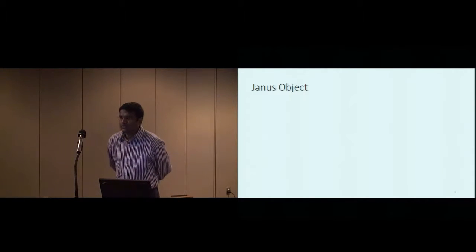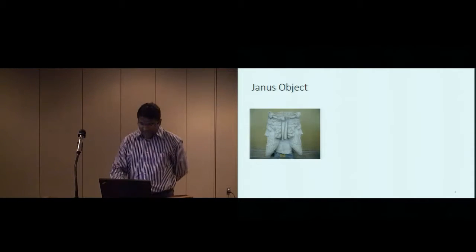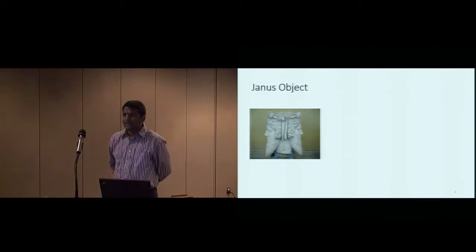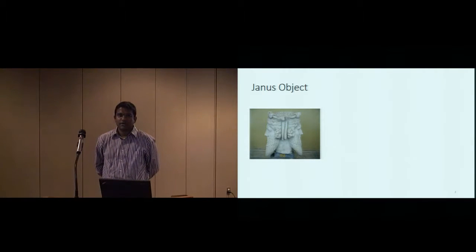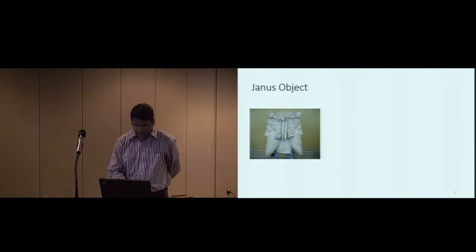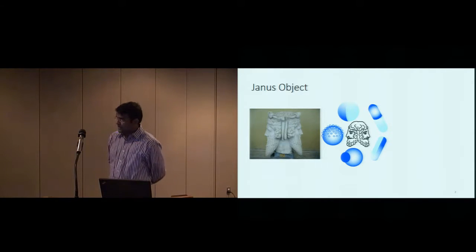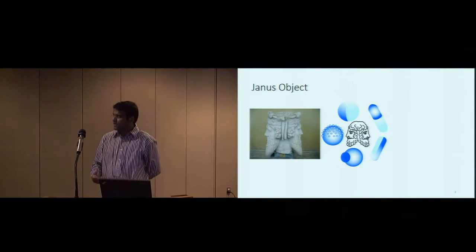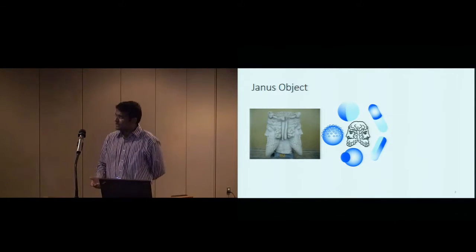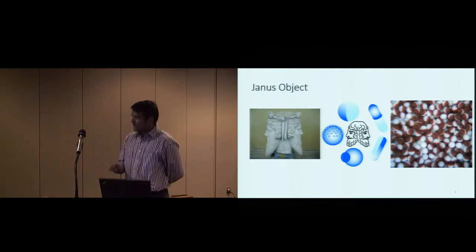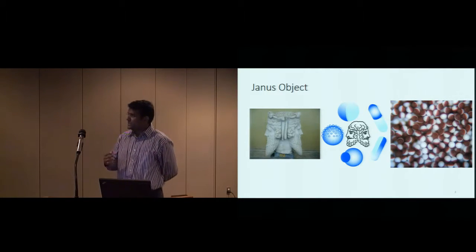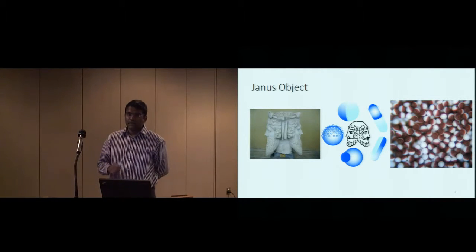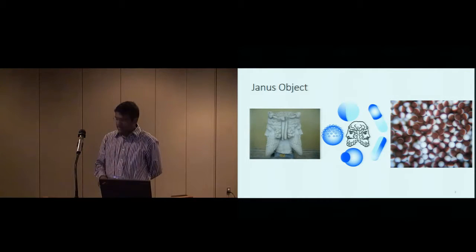What is a Janus object? Janus is a Roman god who could look to the future and the past. Scientists call Janus objects the particles which can present two or more chemical or physical properties. For example, this one has two colors — white and dark red — and the dark red coating is paramagnetic, so it has two different magnetic properties.